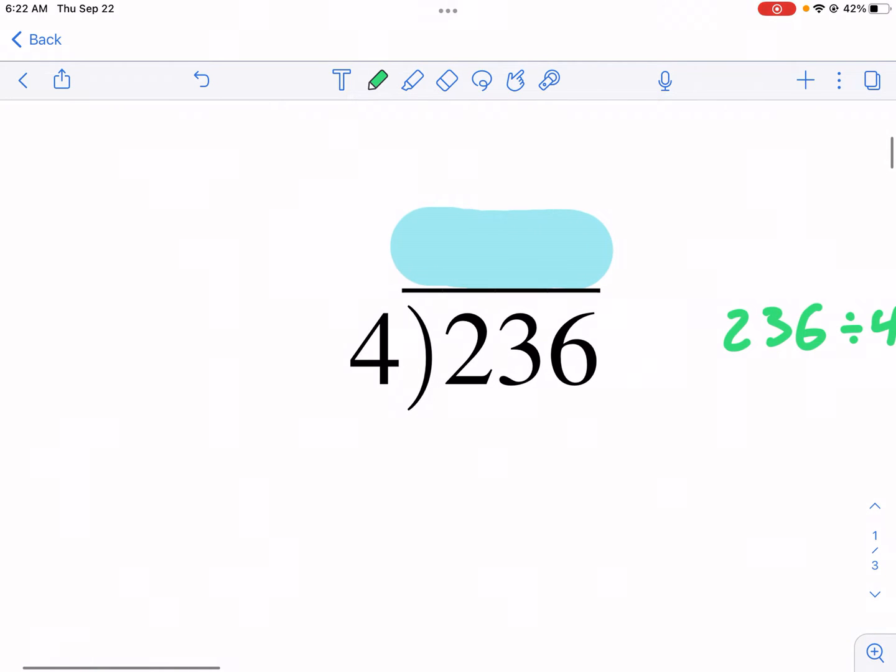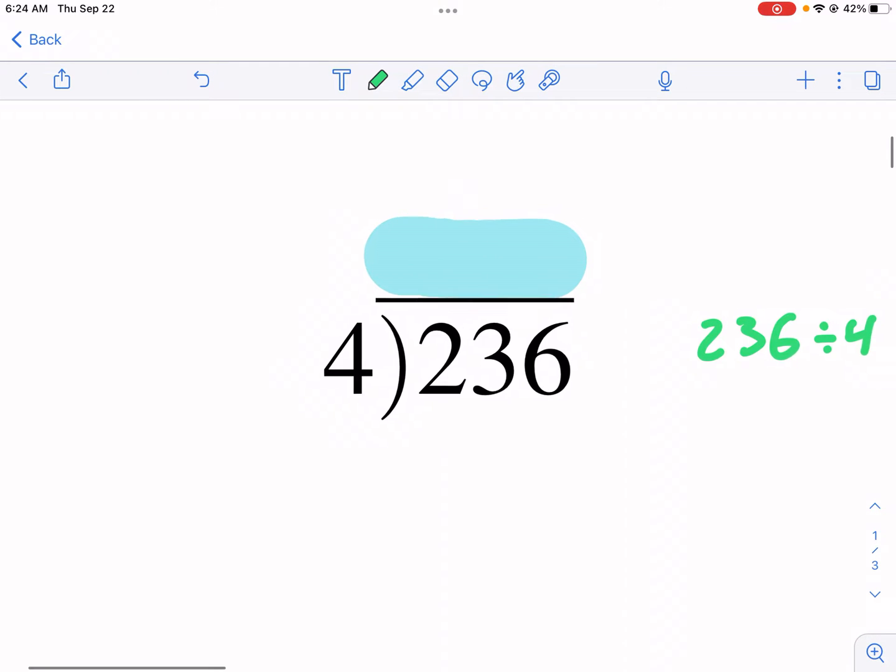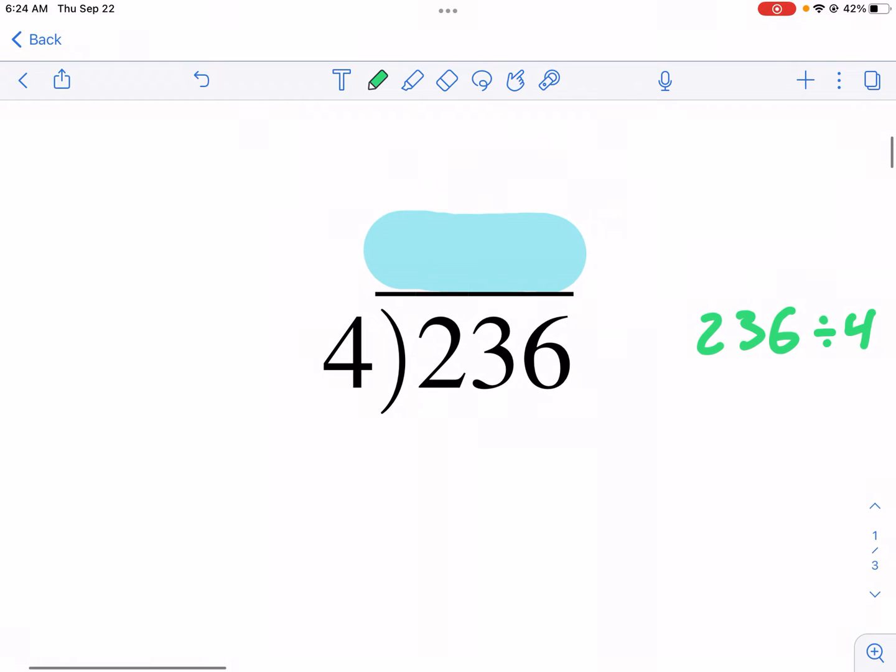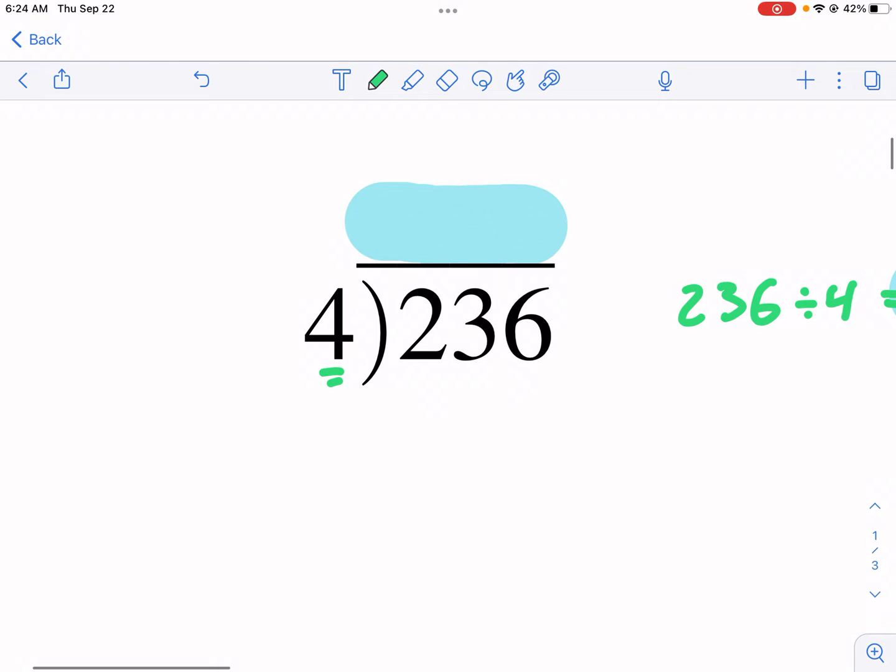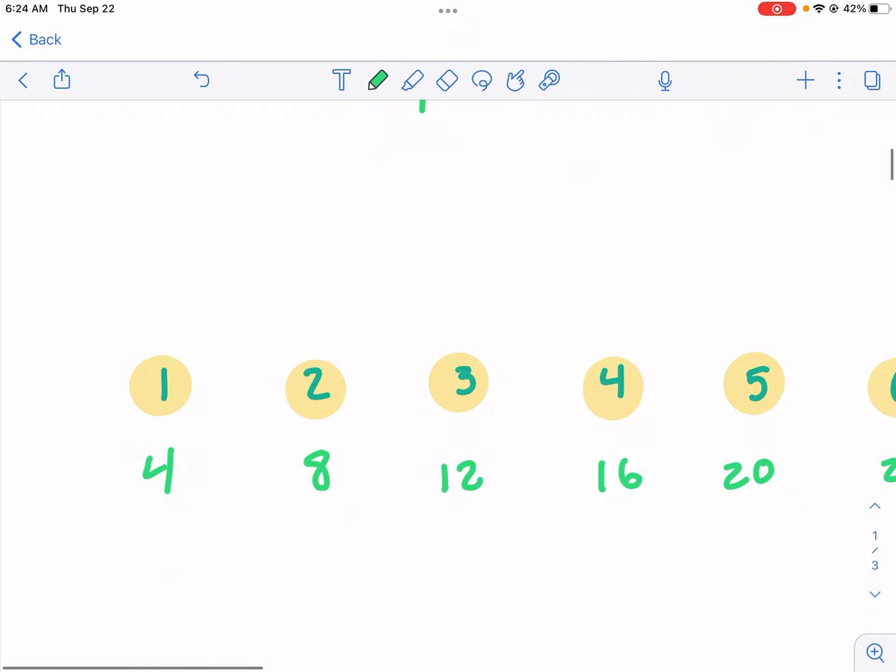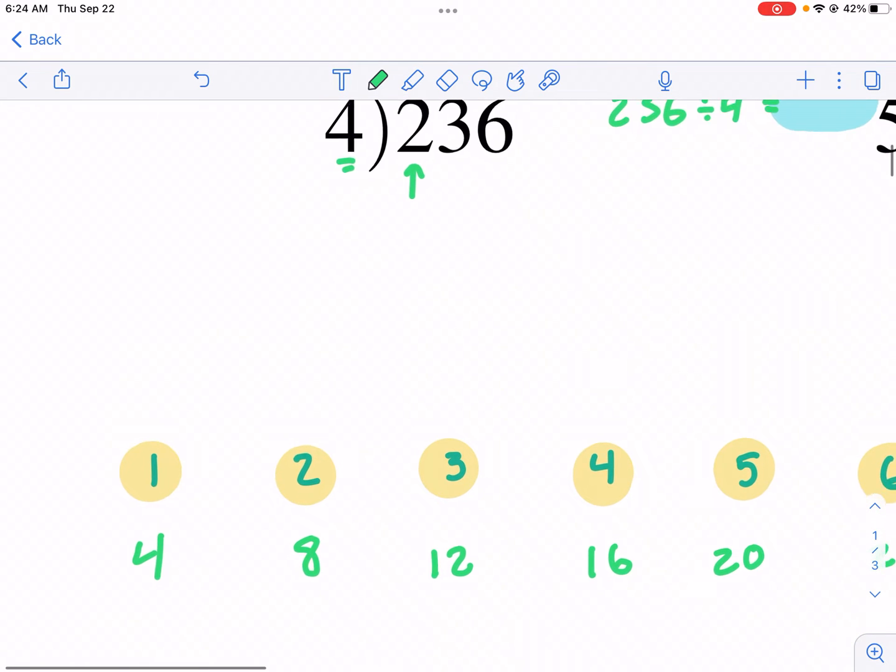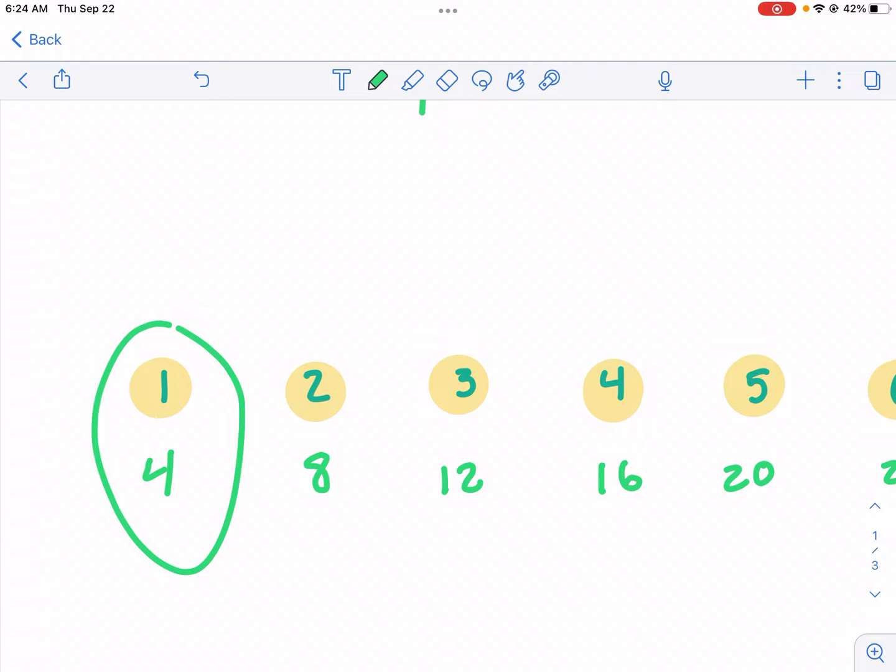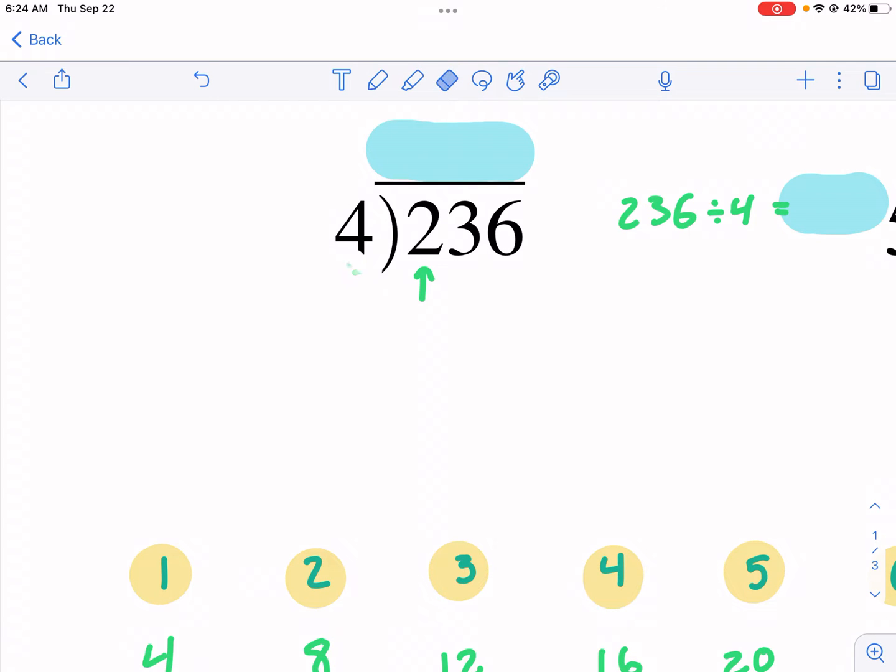This is how it works. So we're going to first look at our dividend that's inside the house. We see we have three digits there, and then we have our divisor. That's what we're dividing by. So we're going to see how many times does 4 go into each one of these digits. So first off, what do we mean by that? Well, we're going to see, does 4 go into the number 2? And what I mean by that is, can we use multiples of 4s to get to 2?